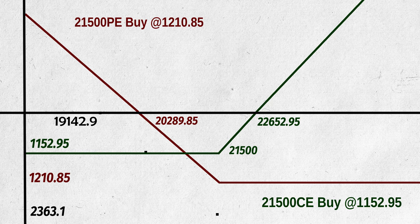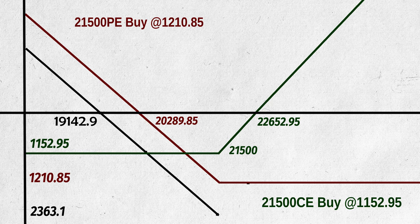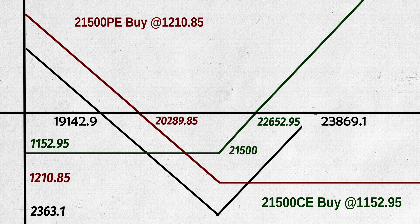From there, however much the price falls, we will get 25 rupees per lot with every point fall. The breakeven point upside is 21,500 plus 2,363.1, so 23,863.1 is the breakeven point upside. From there, however much the price rises, we will profit 25 rupees per lot with each point move upside.